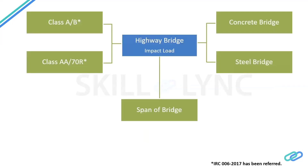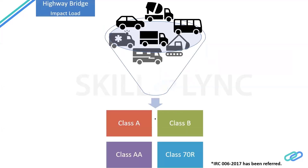For highway bridges, the impact factor is based on these parameters: vehicle type — class A, class B, class AA, and class 70R — the span of the bridge, and the material of the superstructure. There are many vehicle types in the current market, but we cannot design for all of them. The code provides four governing vehicle types such that if you design for these four types, your bridge will satisfy the impact factor requirements for all other vehicle types.